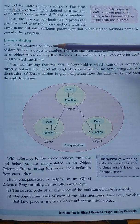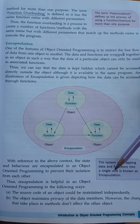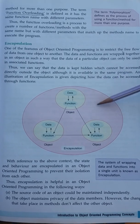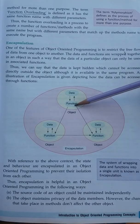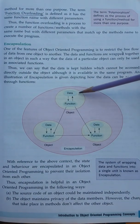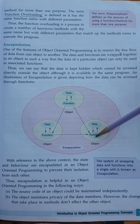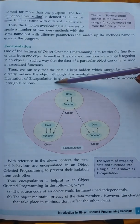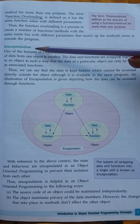Then we have another concept: encapsulation. Encapsulation is the wrapping of data and functions into a single unit. For example, a TV and its remote — both functions are bound together so that the TV works with the remote. We have to create a boundary so that our data and functions are linked together and nobody can interfere in our area. That's why we have the concept of encapsulation.